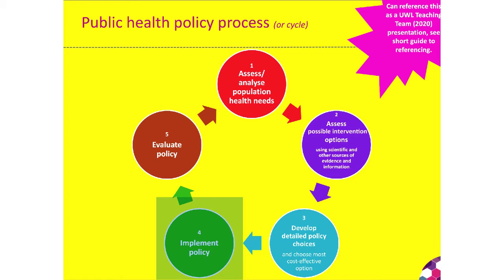Then, as in the previous model, we implement the policy at local or national level — though even national policies have elements actioned locally. For example, the government's policy that pubs should close at 10pm during COVID had to be enforced at local level by local authorities and the police. The government in Whitehall cannot check every pub in the country; that is the job of environmental health officers and police services.